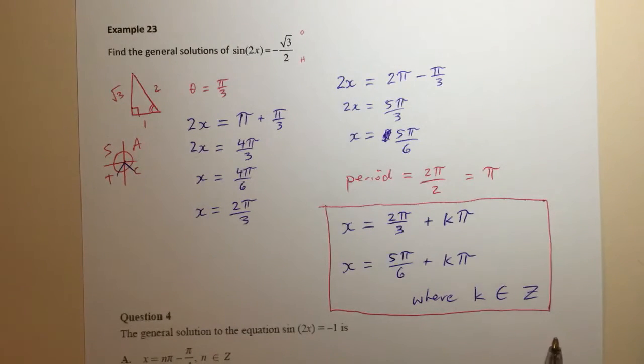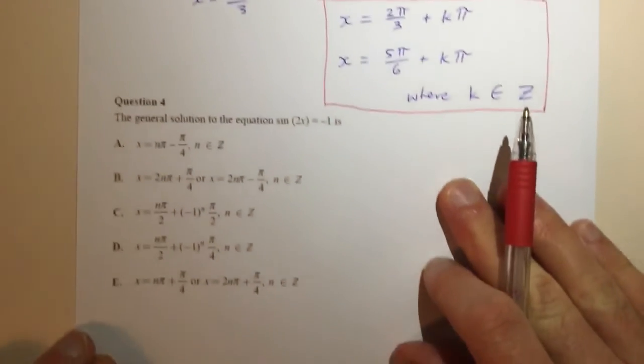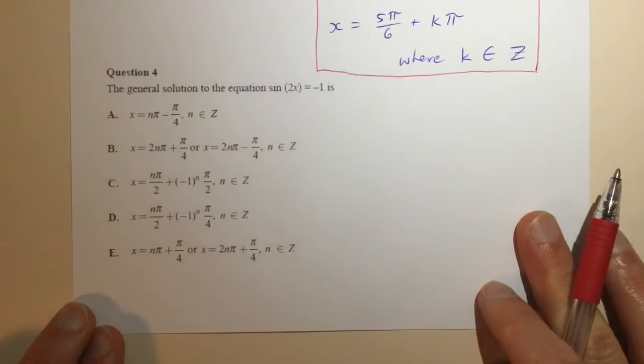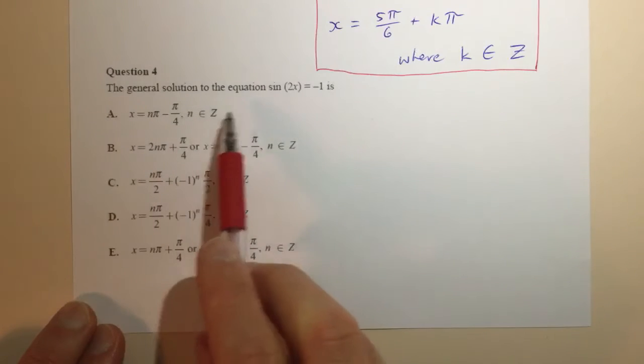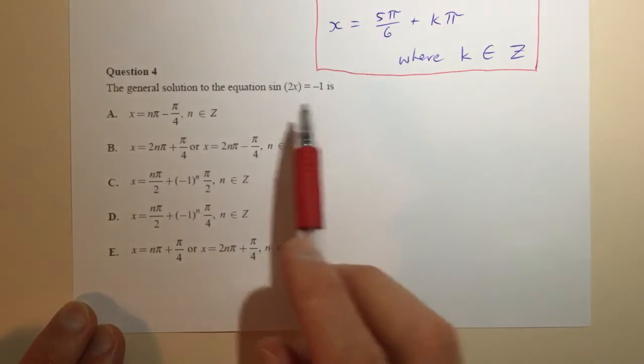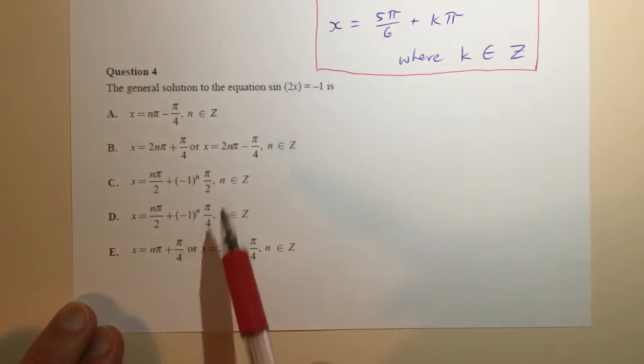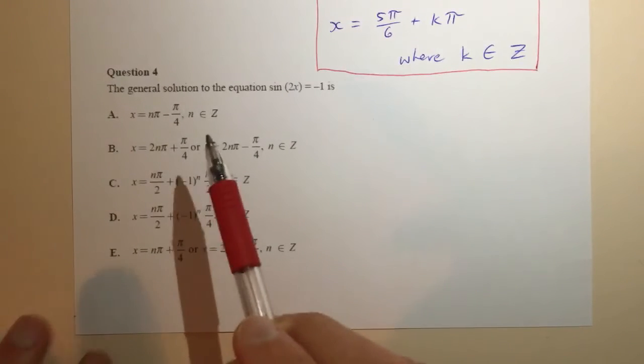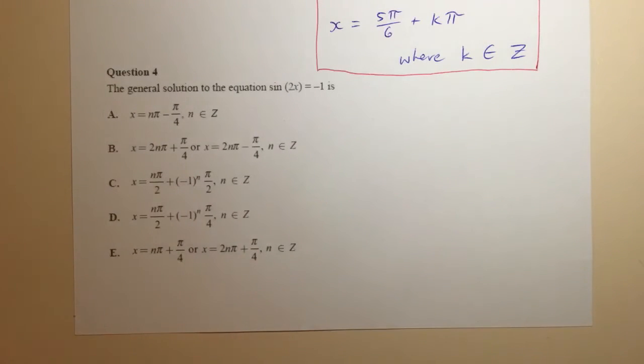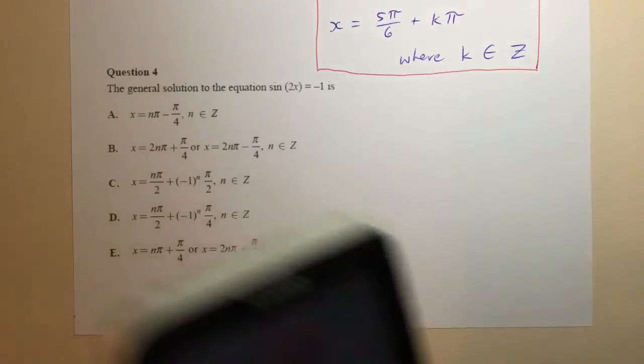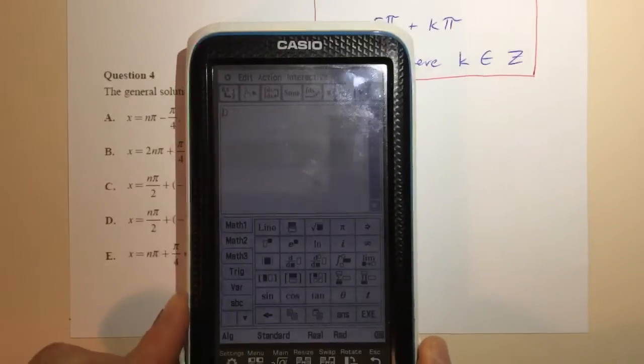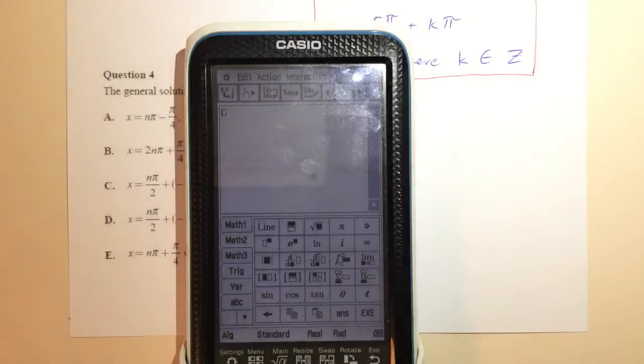If we have a look at a multiple choice question from a past exam, the general solution to the equation sin(2x) = -1 is, you can see these solutions would look really really ugly and that would be enough to kind of scare a lot of people off. It's a calculator question so let's use our calculator. Again I'm sort of having to do this old school because my calculator computer is not working, calculator on the computer I should say is not working.